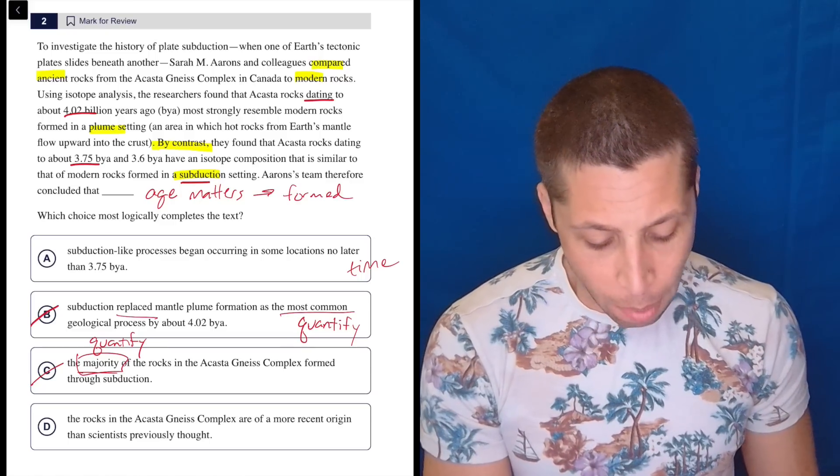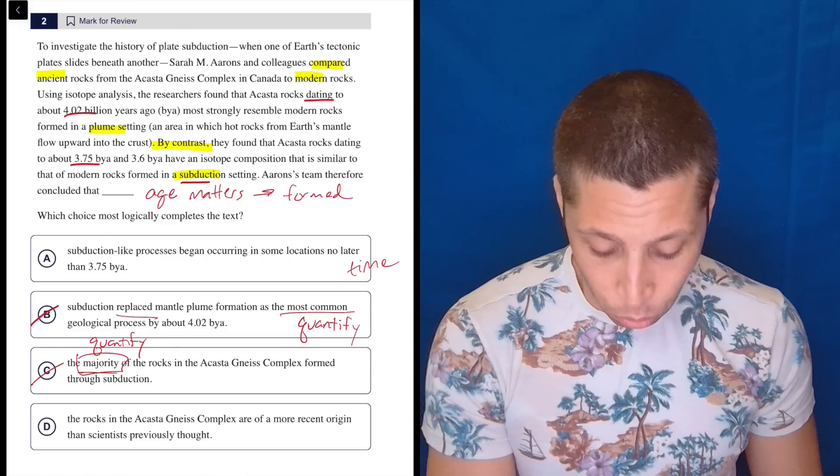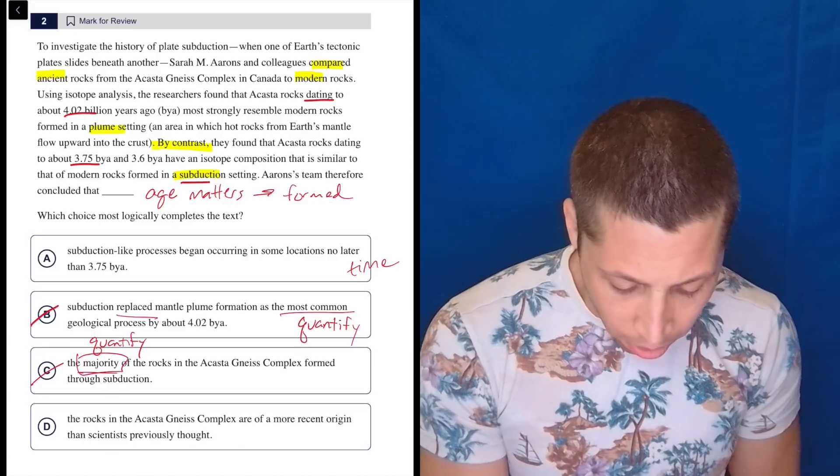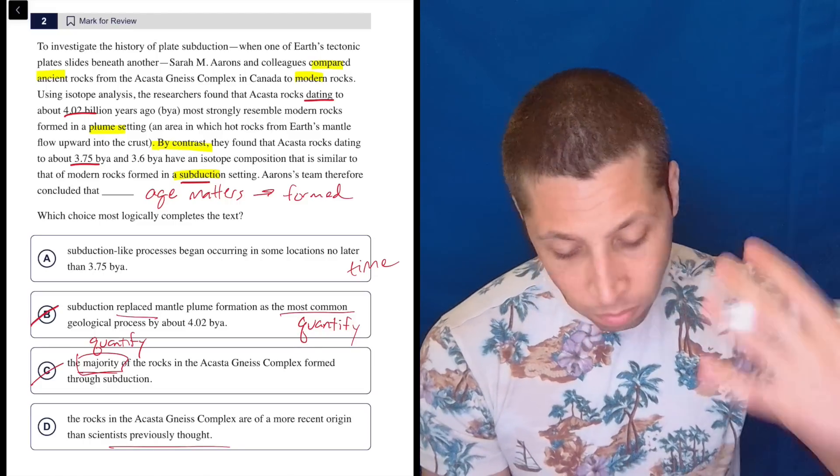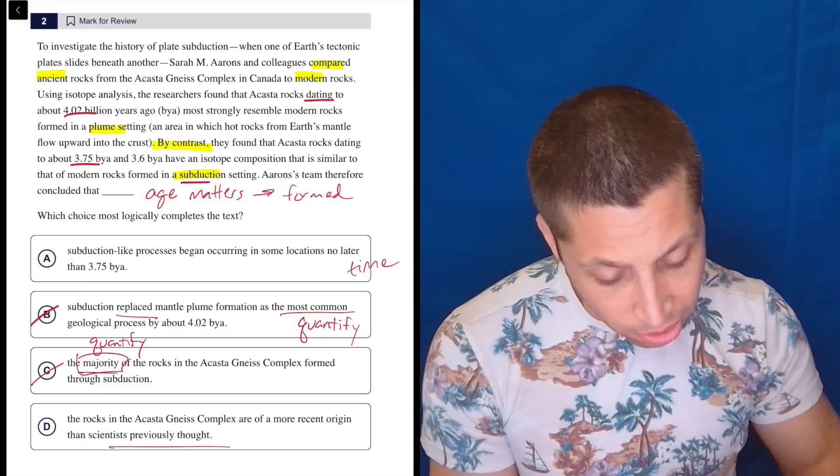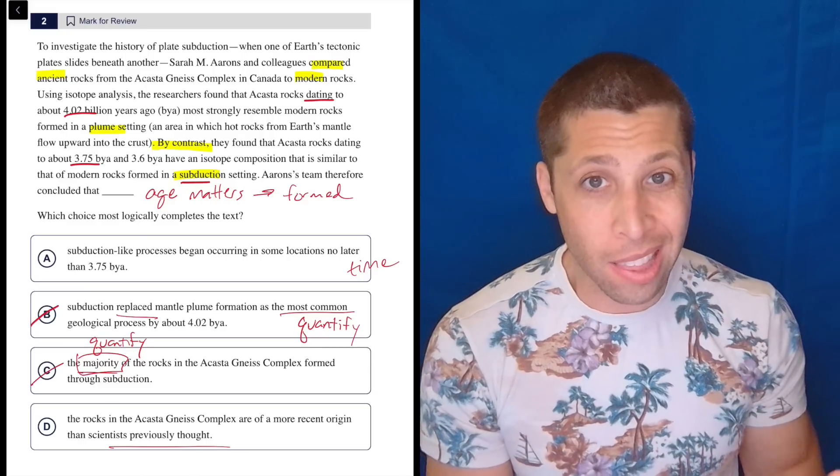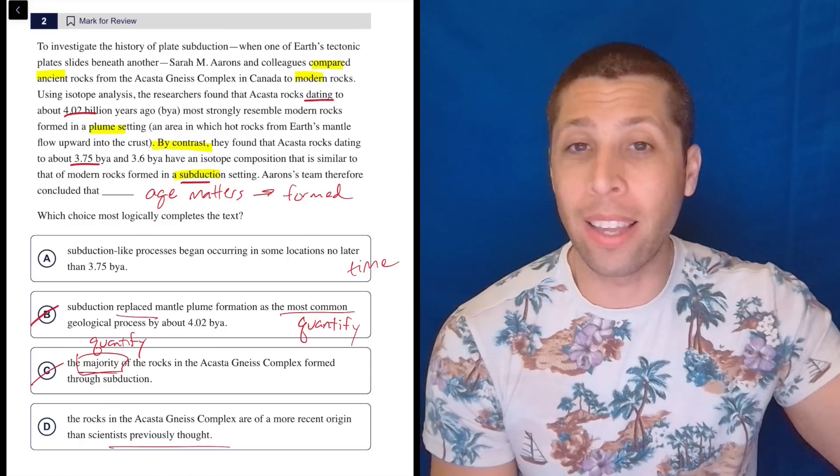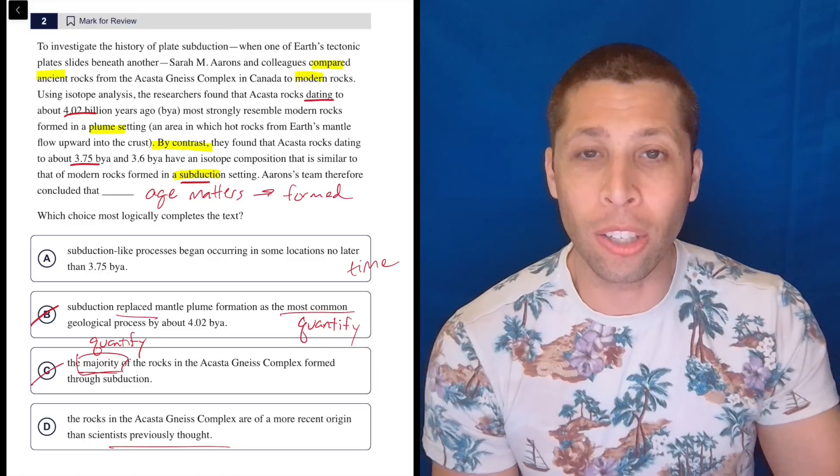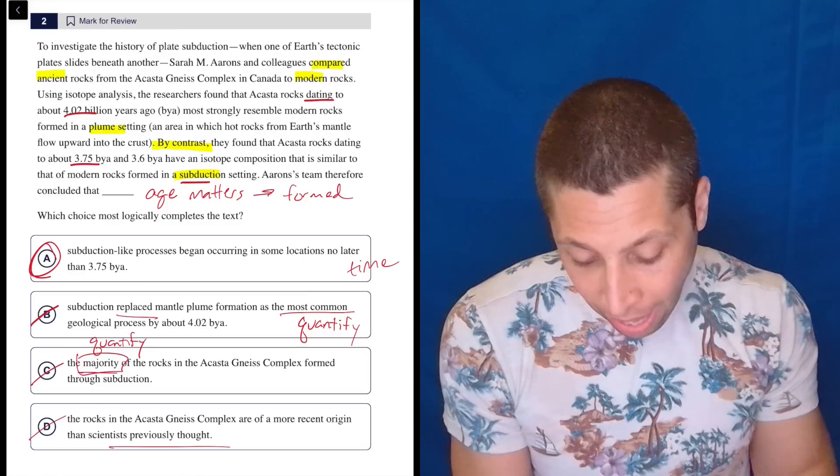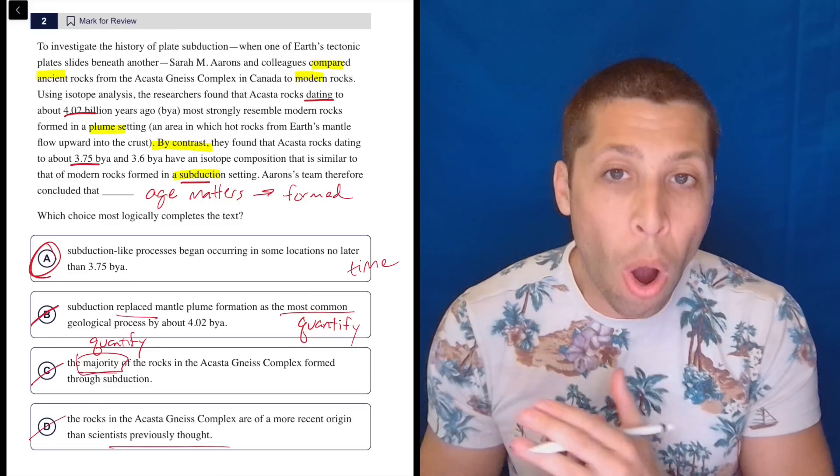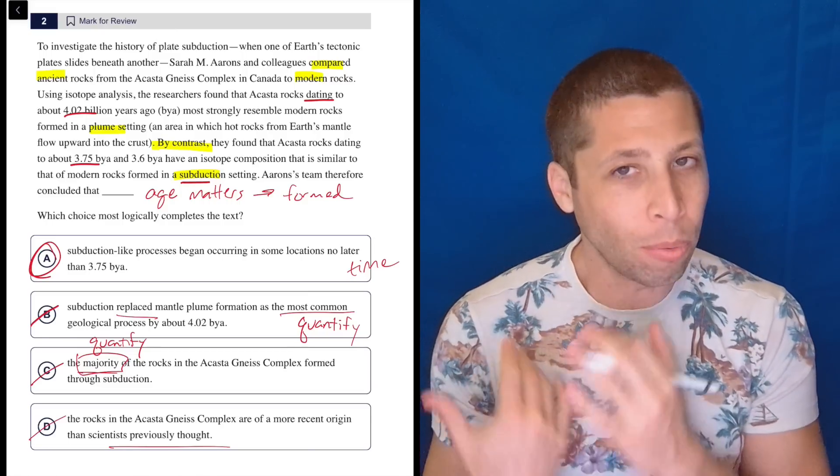D, the rocks in the Acosta-Nice complex are of a more recent origin than scientists previously thought? No, I don't know what they previously thought, right? Does it say they were trying to investigate this thing? They did a comparison? It doesn't say that they thought it was going to be one thing and then the result of the study showed otherwise. So honestly, I don't even need to care anymore about A. It has to be that. The others are so obviously wrong that I really have no choice.